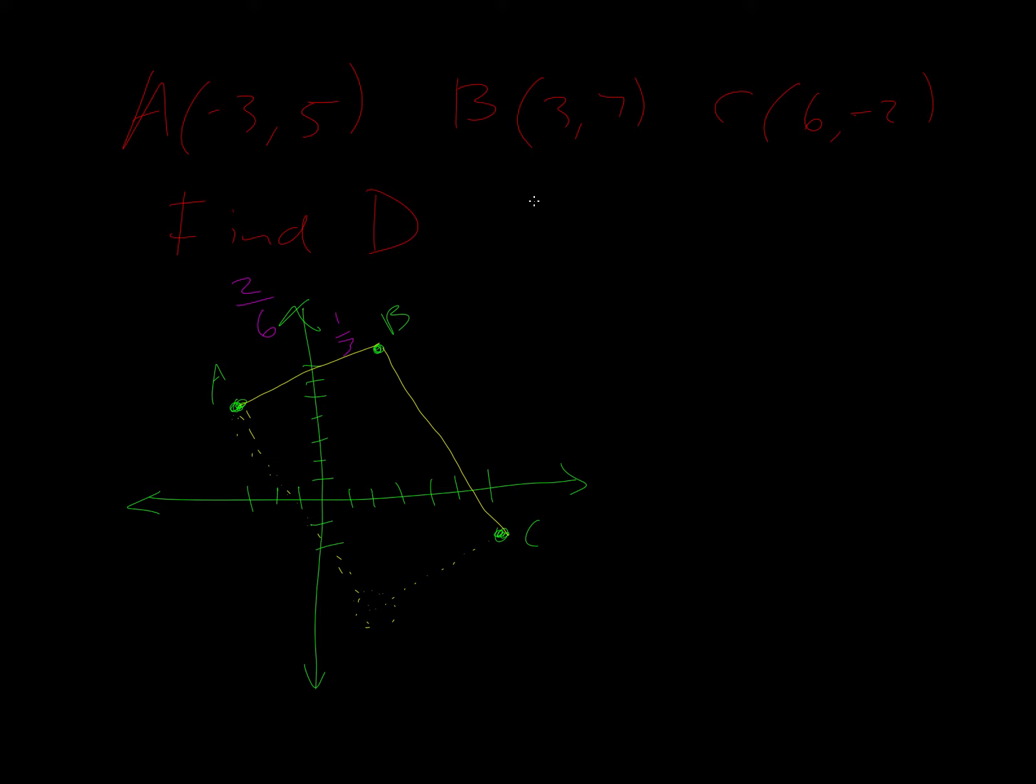Now, because we know if the slope is one third, the perpendicular slope is negative three - you flip the fraction upside down and change the sign. But let's verify that just to make sure. So if we go from B to C, we start at seven and go down to negative two, so that's a drop of negative nine. And then our x values change from three to six, which is a three. So if we simplify that, it is negative three like we were expecting.